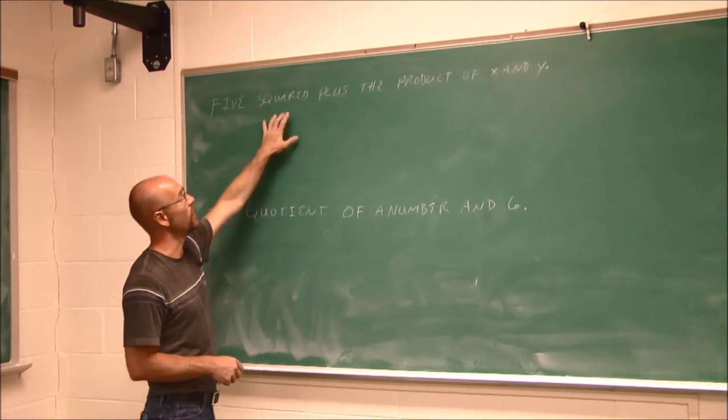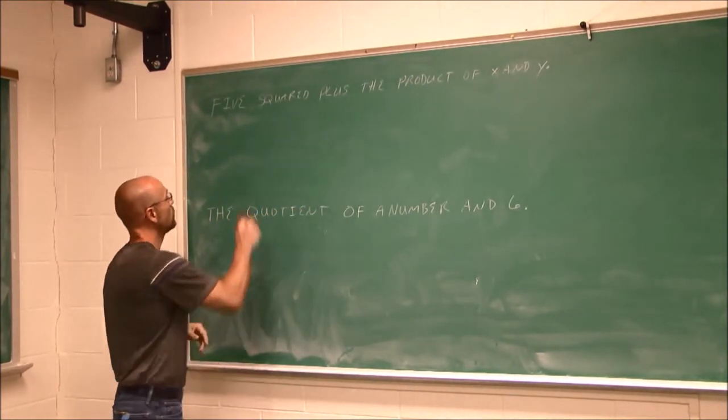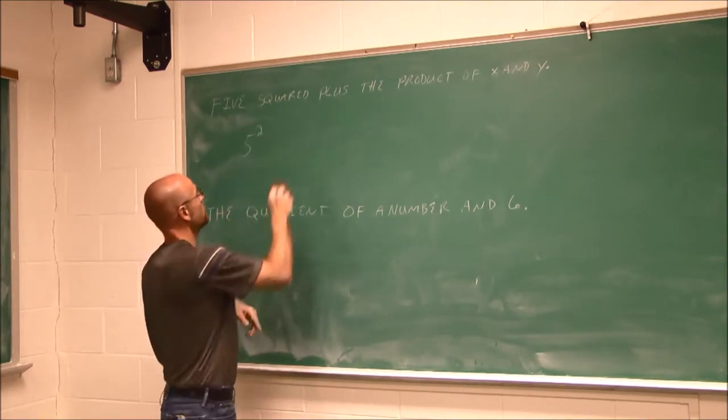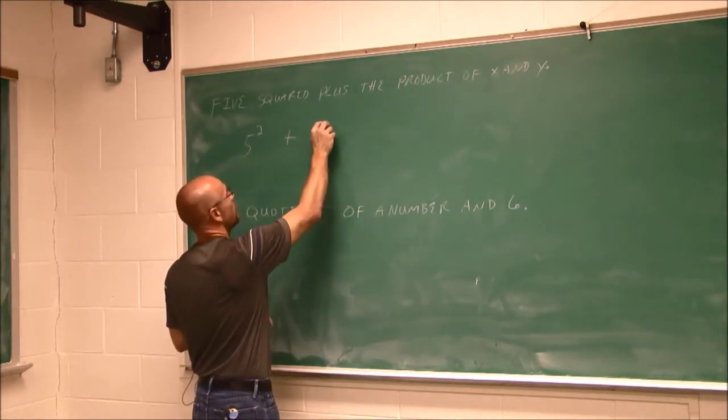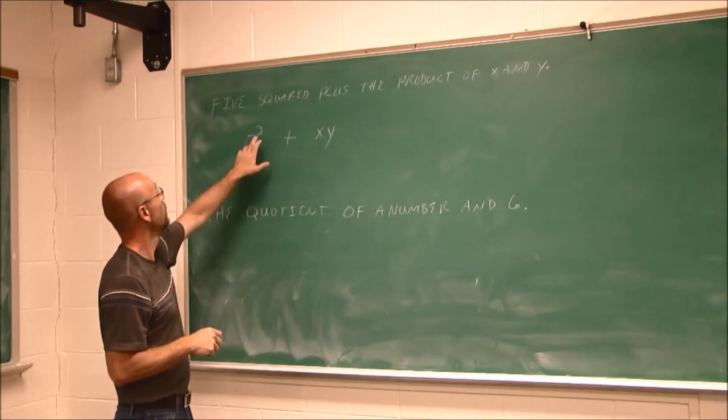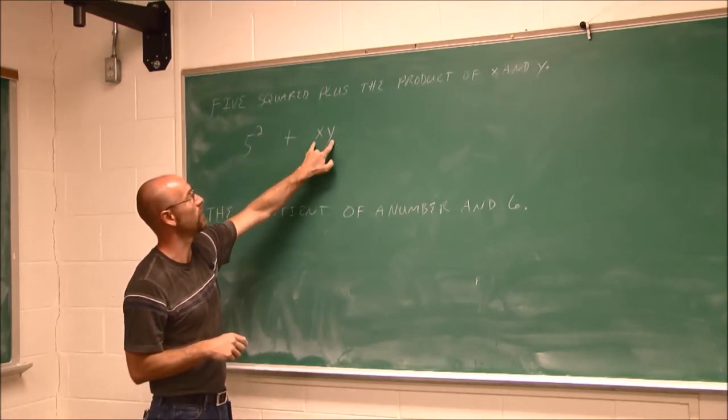This one says 5 squared plus the product of x and y. So 5 squared plus the product of x and y, x times y. Or I can just write it xy. 5 squared plus the product of x and y.